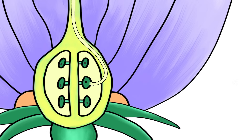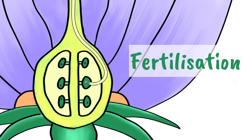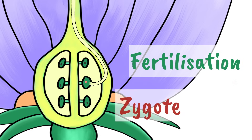Here, the pollen nucleus fuses with the egg cell nucleus. This fusion of the two nuclei is fertilization, which creates a new cell called a zygote.